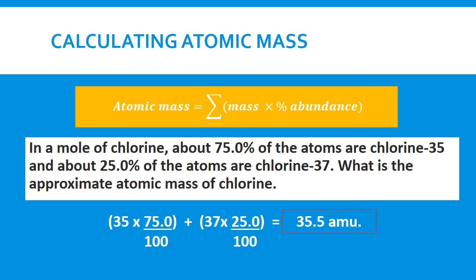Notice that chlorine-35 is in greater abundance at 75%, so we expect the atomic mass to be closer to 35 than to 37 — and indeed 35.5 is closer to 35. Also remember that a percentage means out of 100, so 75% means 75 divided by 100, which is why we divide by 100 in the calculation.